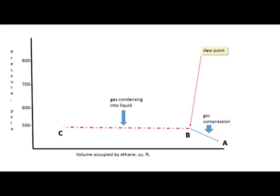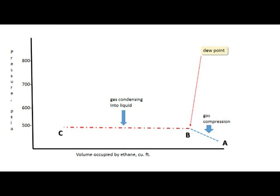On slide two, you can see that once we reach point B, we hit what's called the dew point. The dew point is where the first drop of liquid appears. At this point, we continue to move the plunger in, which reduces the area, which compresses the gas. As we move it toward C, more and more liquid appears and less gas appears. One thing you will notice: the pressure does not increase. We will change from gas to liquid, but the pressure does not increase until we hit point C.